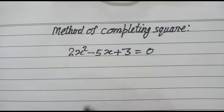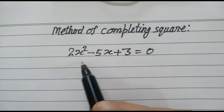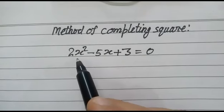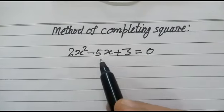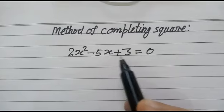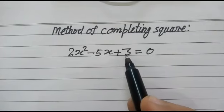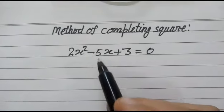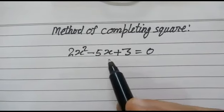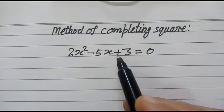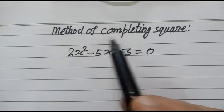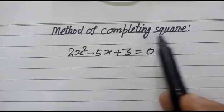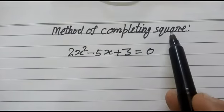Hi friends, good morning. Today we have a quadratic equation 2x² minus 5x plus 3 is equal to 0. We have to solve this equation using the method of completing the square.